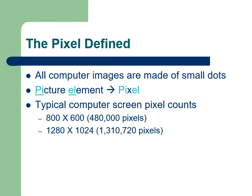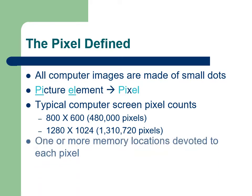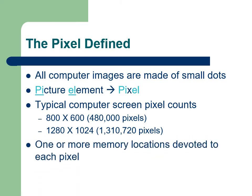In addition to the pixel count, my computer devotes 32 1-bit memory locations to each pixel to display different colors. This means on my computer, each pixel on the screen can display more than 4 billion different colors.